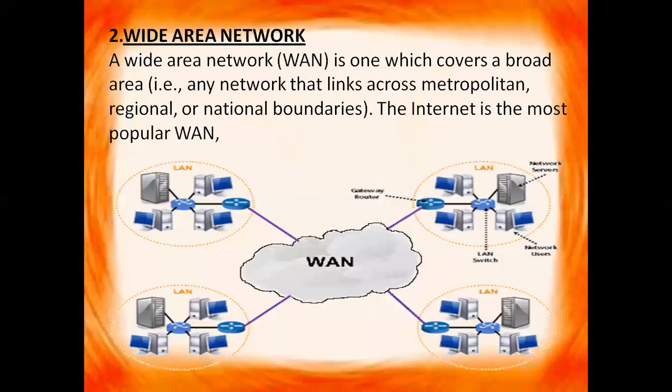Then we have wide area network. A wide area network covers a broad area — any network that links across metropolitan, regional or national boundaries. The internet is the most popular WAN. A WAN is formed by the combination of a number of LANs joined together, and the example of a wide area network is the internet, which is spread throughout the world.